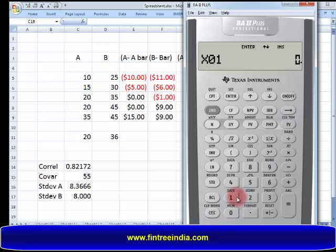We will assume A as X and B as Y. X1 is 10, enter. Y1 is 25, enter. Then downwards: X2 is 15, Y2 is 30. Next, X3 is 20, Y3 is 35. Then 20, 45. Then 35, 45. Once you've inserted all the values, press second and 8 which will bring you inside the stat function.